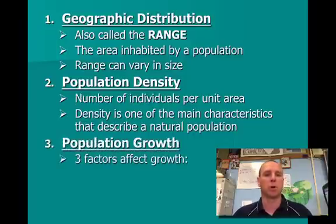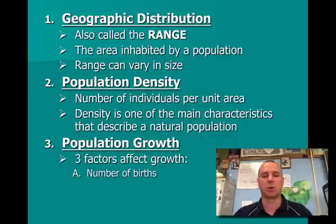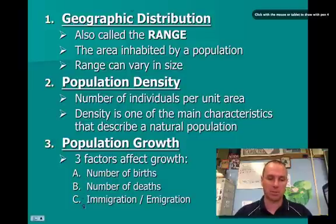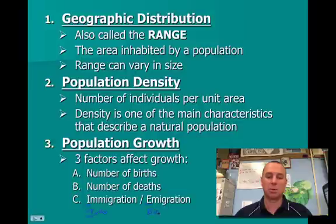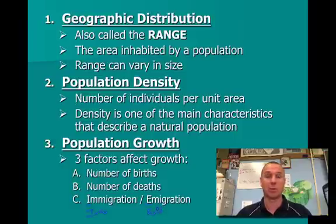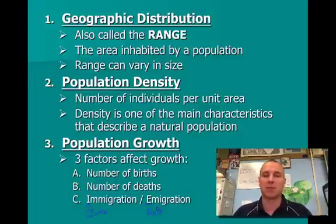The last characteristic is population growth. There are three specific factors you need to know for the test that deal with population growth: number of births, number of deaths, and immigration with an I and emigration with an E. Immigration means when individuals come into an area, and emigration means when something leaves the area. If births outnumber deaths, the population is growing. If deaths outnumber births, the population is going down. Similarly, if more individuals are coming into a population than leaving, the population will also go up. These three factors affect population growth.